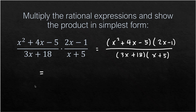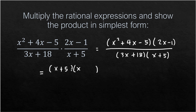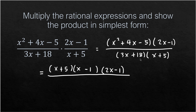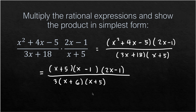Now we factor. x²+4x-5 factors as (x+5)(x-1), since positive 5 and negative 1 multiply to -5 and add to +4. The term 2x-1 cannot be factored. In the denominator, 3x+18 factors as 3(x+6), and x+5 cannot be factored further. We can then cancel the common factor (x+5) from numerator and denominator.